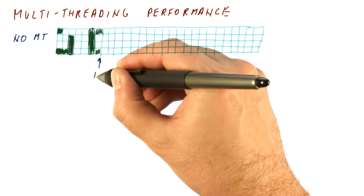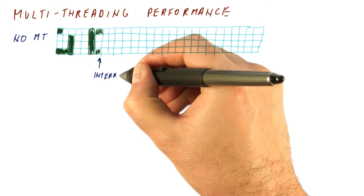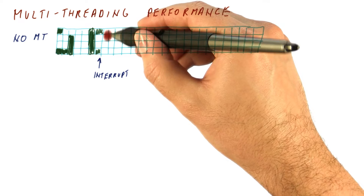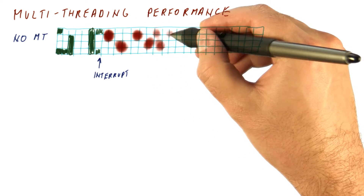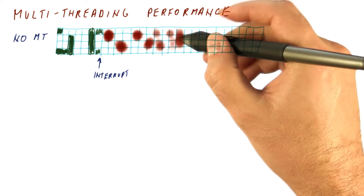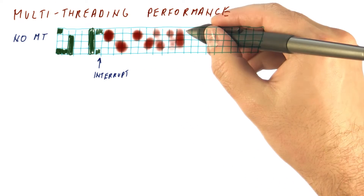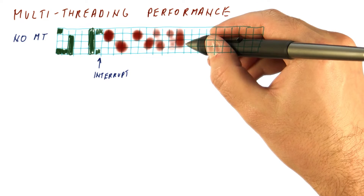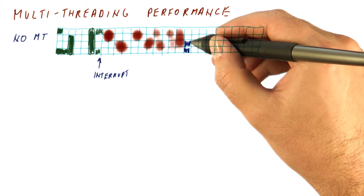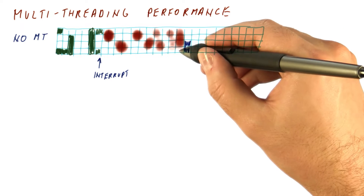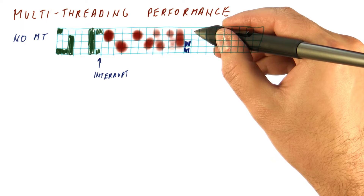At this point, let's say we get an interrupt. Because there is another thread ready to run, we now get many cycles of the operating system doing its thing — also utilizing the pipeline in some way, but spending many cycles figuring out which thread to run next. Eventually it decides on the blue thread and begins executing instructions from it. This is where we return from the interrupt and start executing a new thread.